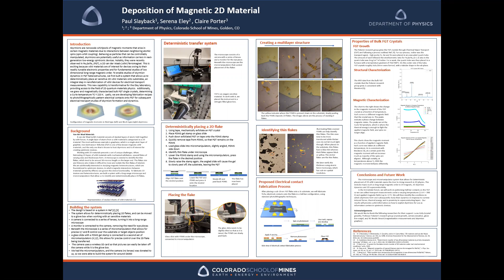My project was developing a system to work with 2D materials. 2D materials are classified as materials that are one atom thick, the most famous of which is graphene, which comes from graphite. Iron germanium telluride, or FGT as it will be referred to in this poster, is the material that we are interested in.